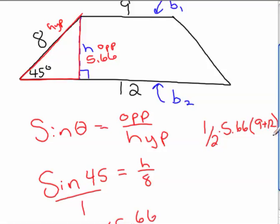So you take 1 half times 5.66 times 9 plus 12. Just follow the formula. And now you just do your order of operation. 5.66 is the height. 9 and 12 are your two bases. So you start inside the parentheses. 9 plus 12.